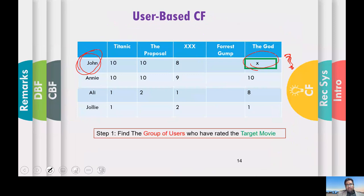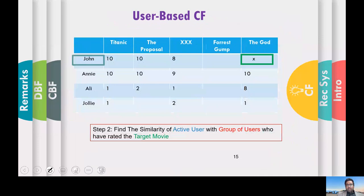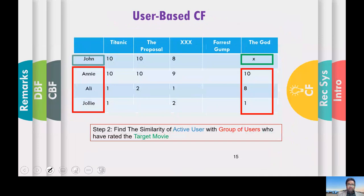In the first step of collaborative filtering — also called user-centric collaborative filtering — you find the group of users who have rated the target movie. Here you can see Annie, Ali, and Julie have rated this item. These form the community of users. Now you want to find the similarity of these users with John: between John and Annie, between John and Ali, and between John and Julie.